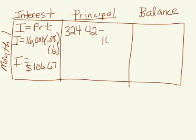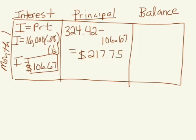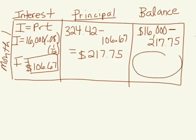$106.67 of this goes towards our interest. That means we are actually left with principal, the amount of money going towards our actual balance of $217.75. Our balance, we started off with $16,000. We paid off $217.75. Which means that our new balance after the first month is $15,782.25.